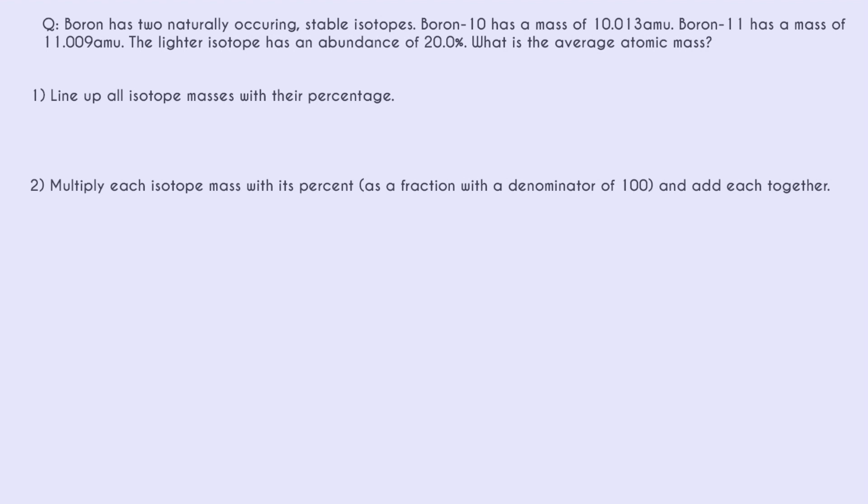So again, we start by just lining up all the isotope masses with their percentage. So we have our two masses, and now we have to do a little bit of figuring out to get the percentages. So it says the lighter isotope has an abundance of 20%. So the lighter one is just our first one that weighs 10.013. And it didn't give us anything for the other isotope, but we can figure it out because we know overall the percentage has to add up to 100%. And since there are only two things and the other one is 20%, we can solve and get that our abundance for the one that weighs 11 AMU is 80%.